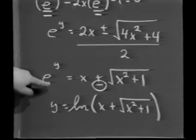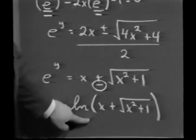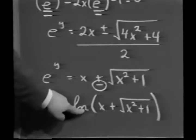Therefore, y itself is the log of x plus the square root of x squared plus 1 to the base e, which we've already seen is called the natural log.